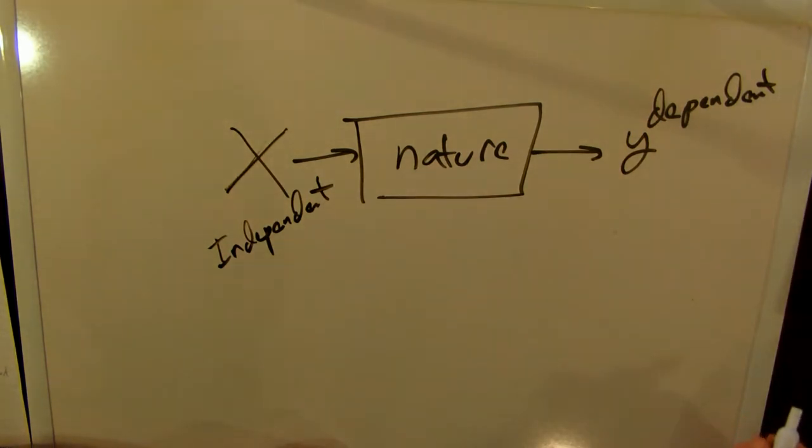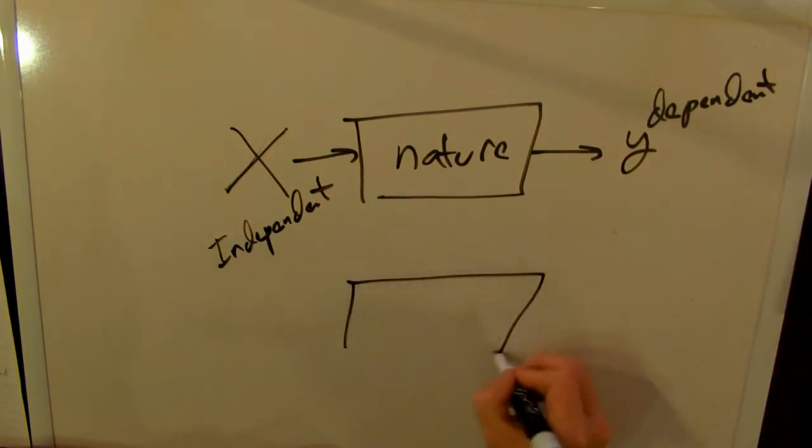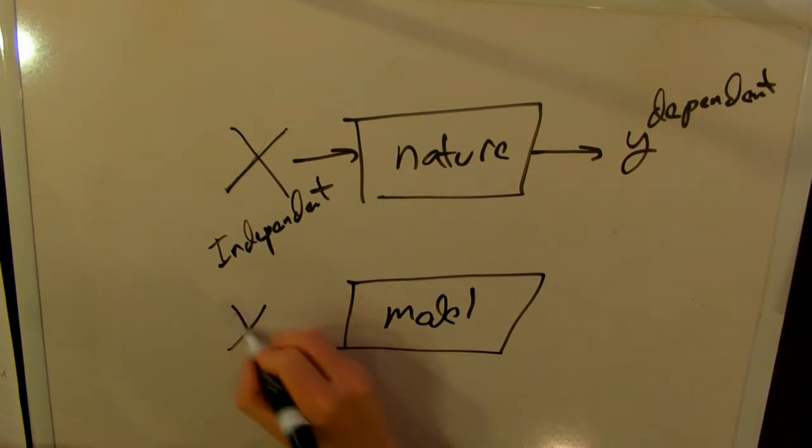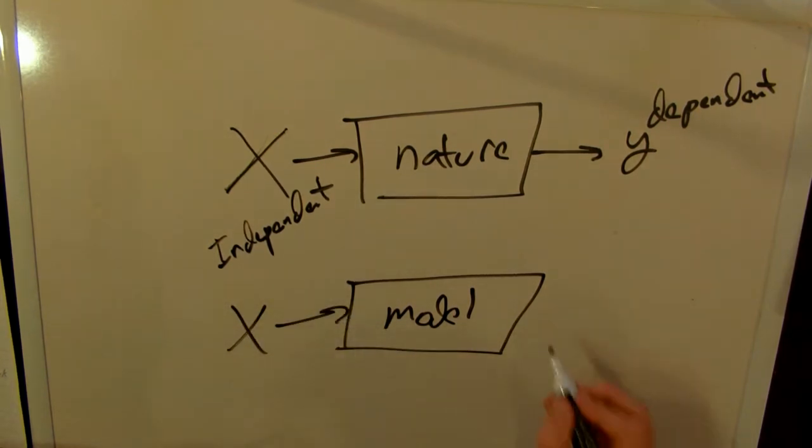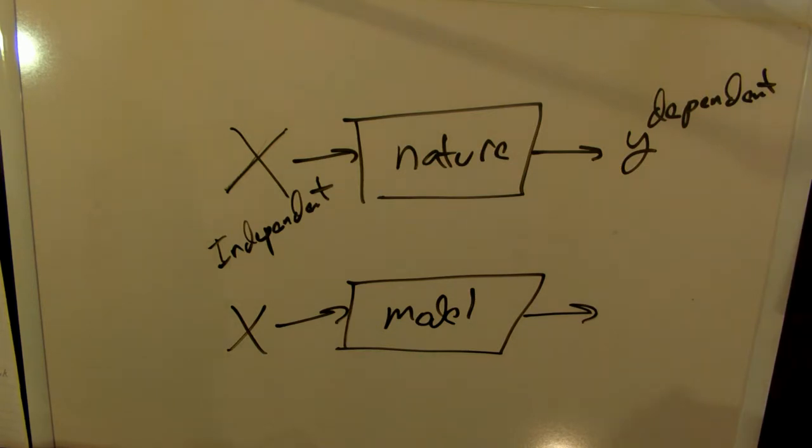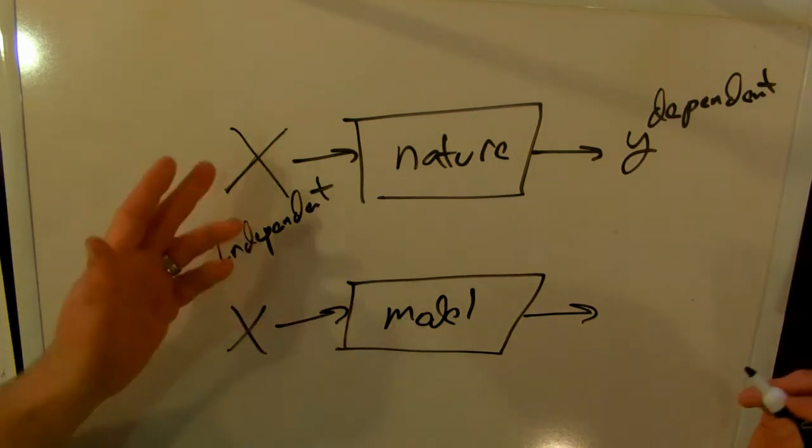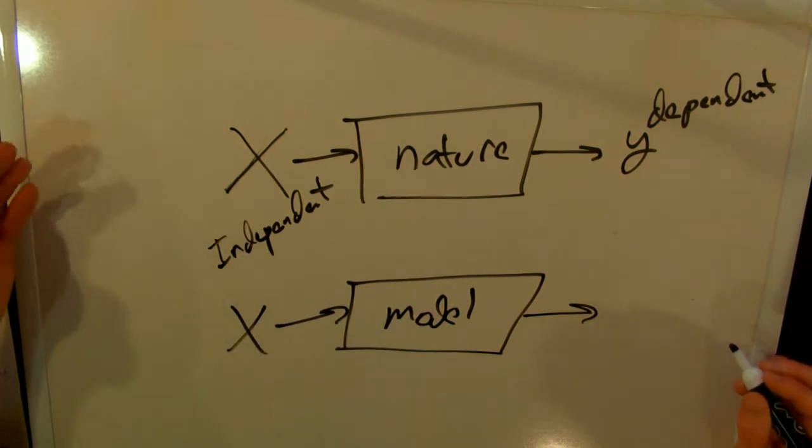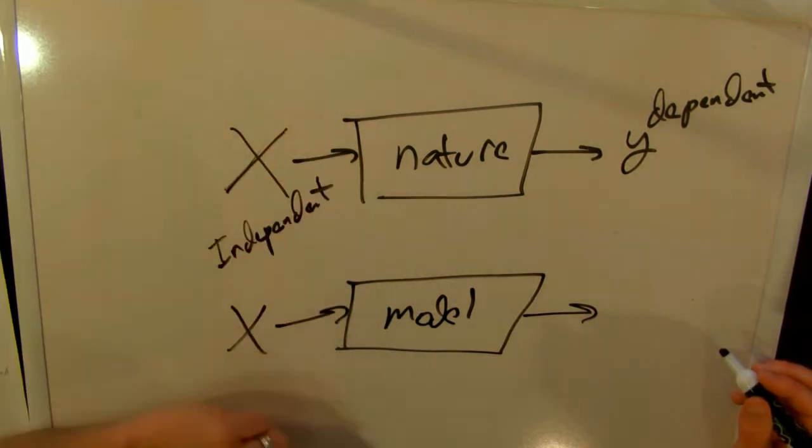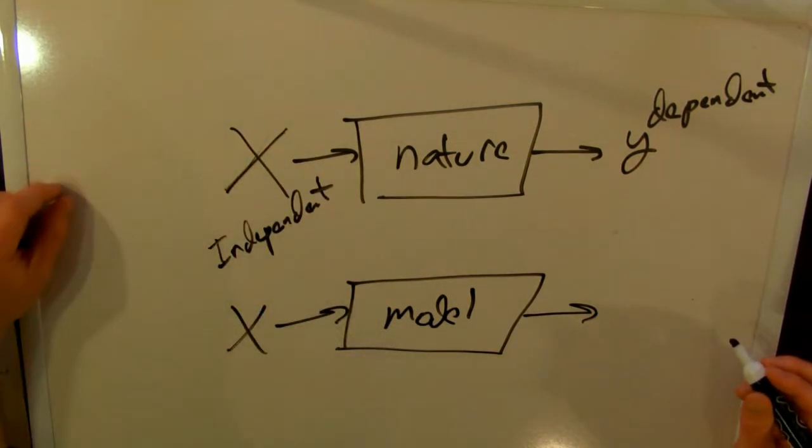If you remember, our goal with all of this was to create some model that approximates nature such that when we put in X, we get out some value. Now, how good our model is is going to be determined by how close we are to the natural model. Obviously, the ideal situation would be for our model to be completely the same as nature. It's probably not going to happen; there's always going to be some error.